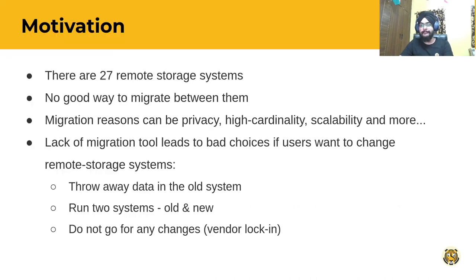Let's begin with the topic. Our motivation behind developing a migration tool for Prometheus was that at present there are 27 officially listed remote storage systems for Prometheus. However, there are no good ways to migrate between them. There can be a lot of reasons for migrating Prometheus data — for example, privacy, high cardinality, scalability, etc. The lack of a proper migration tool leaves users with bad choices: they are forced to throw away data in old systems, or run two systems in parallel, or not make any changes at all. It is an example of vendor lock-in.